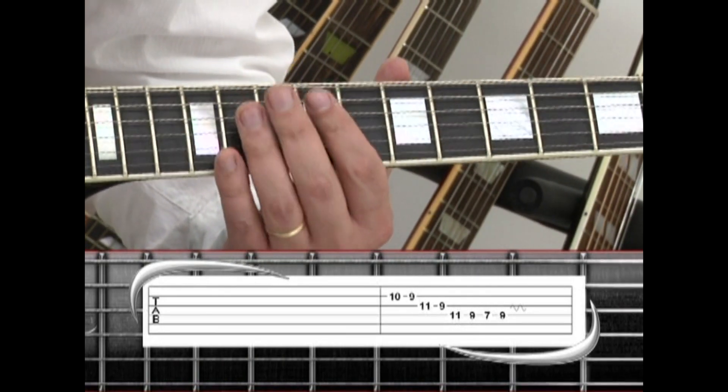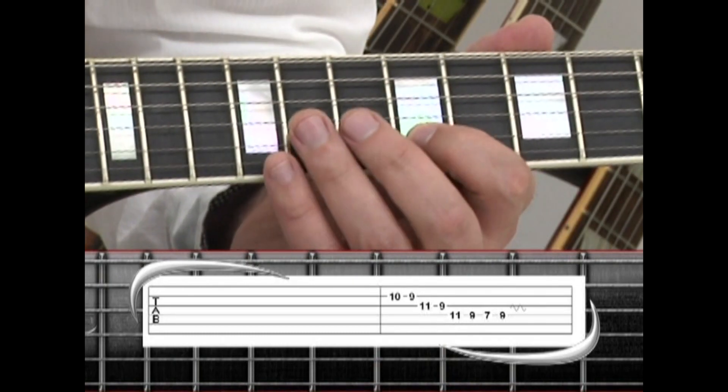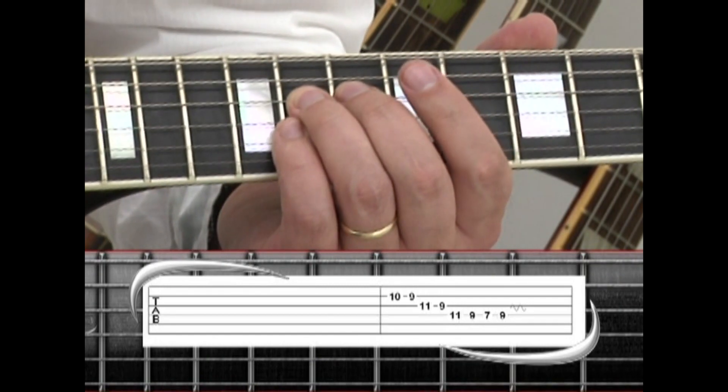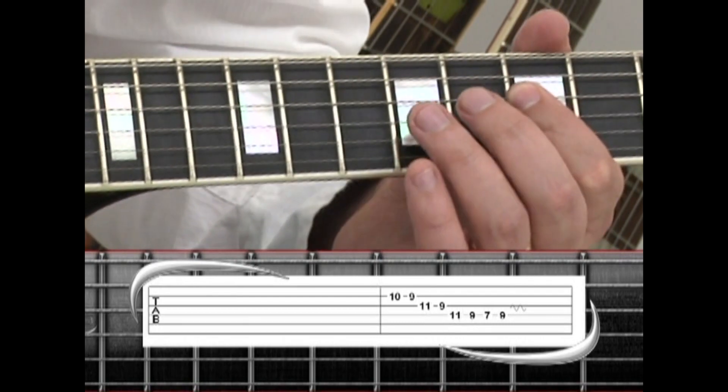Play the 2nd string 10 to 9, 3rd string 11 to 9, to 4th string 11, 9, down 2 frets to 7, back to 9 with vibrato.